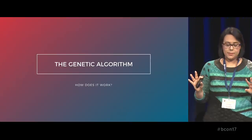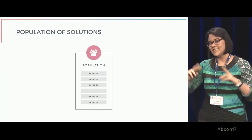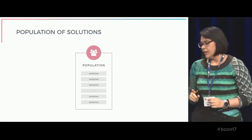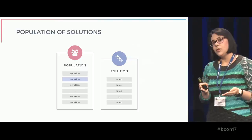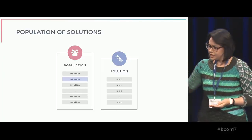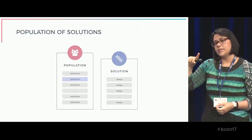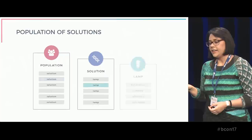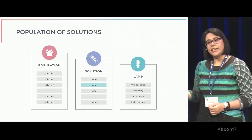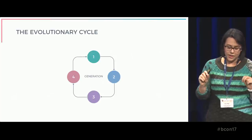Now I'm going to describe in broad terms how a genetic algorithm works. As I said, there isn't a single best solution to the optimization problem, but there is a set of best optimal solutions. That's why genetic algorithms work with a population of candidate solutions. Each individual of this population is a feasible solution to the optimization problem — in our case, a possible lighting configuration for the given interior environment. Each solution is uniquely represented by a chromosome. In our case, a feasible solution is composed of a set of lamp objects, and each lamp is described by its features like the location in 3D space, the light intensity, the energy efficiency, and the model of light fixture.